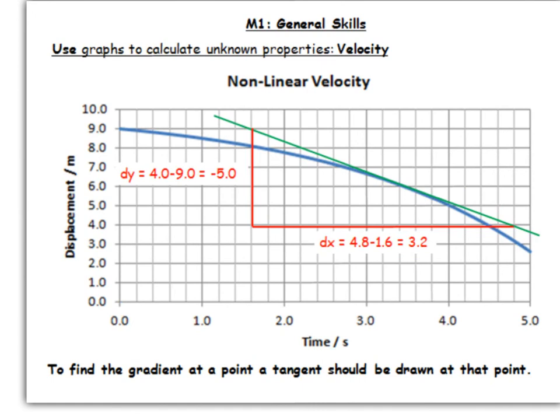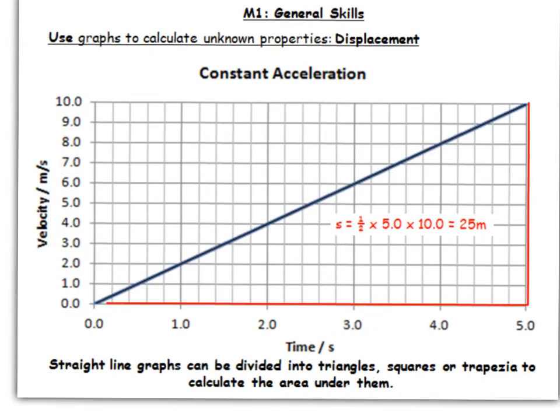So that's using displacement versus time graphs. Let's move on to look at how we can do some other calculations. So in both of the previous examples, we were using the gradient of the line. That's because we had a displacement versus time graph, and velocity is the gradient of that graph, because it's the rate of change.